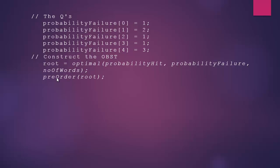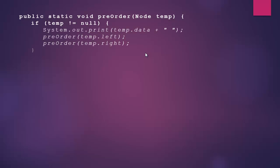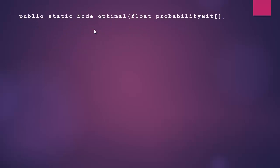We then call pre-order on the result, which prints the tree in pre-order fashion. The pre-order function is straightforward: if temp is not equal to null, print the data with spaces, then call it recursively on the left and right subtrees.